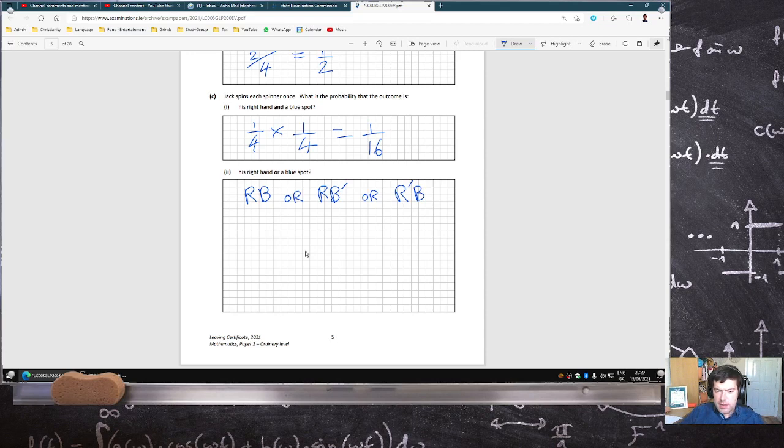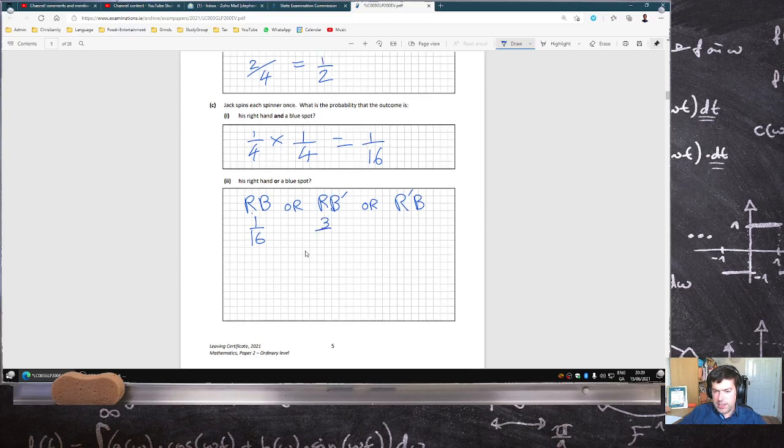So that's a 16th. A quarter times 3 quarters, 3 sixteenths. And this is also 3 sixteenths. So in total that's 7 sixteenths.